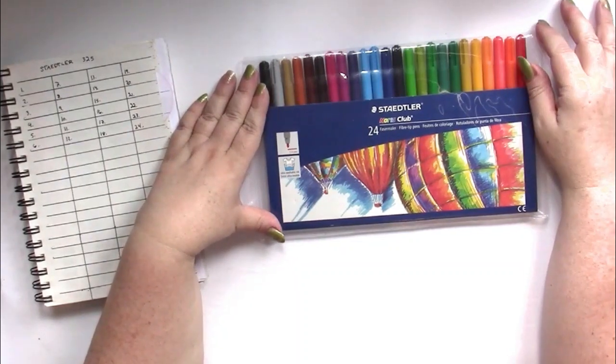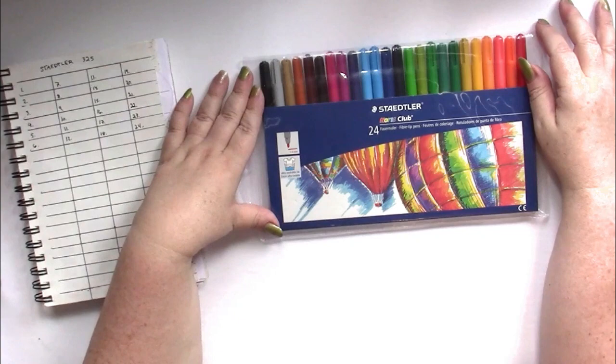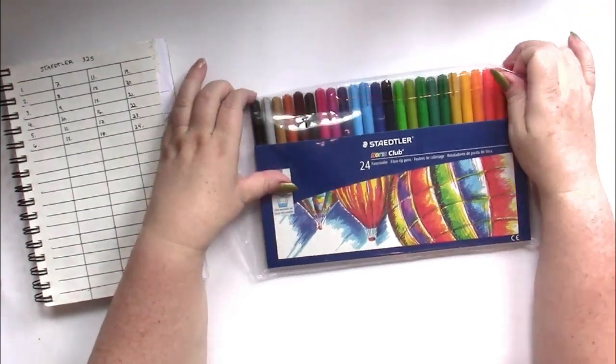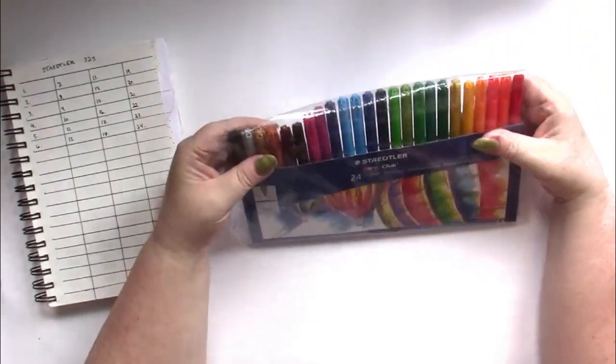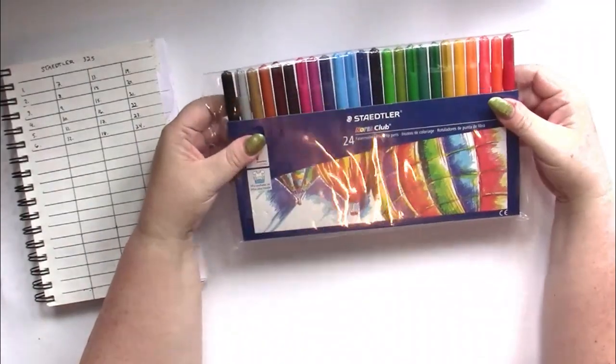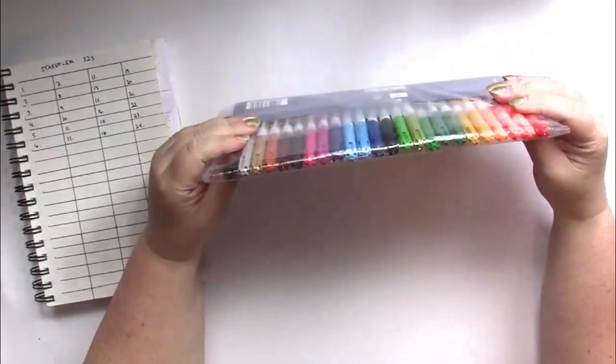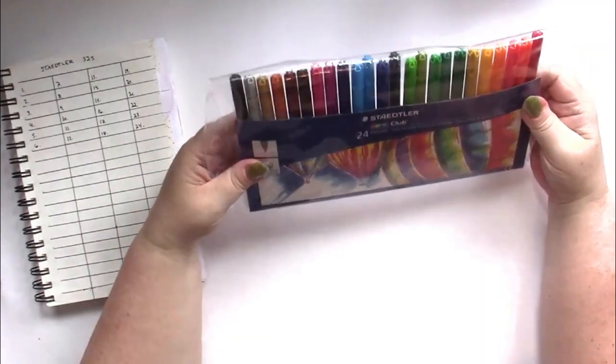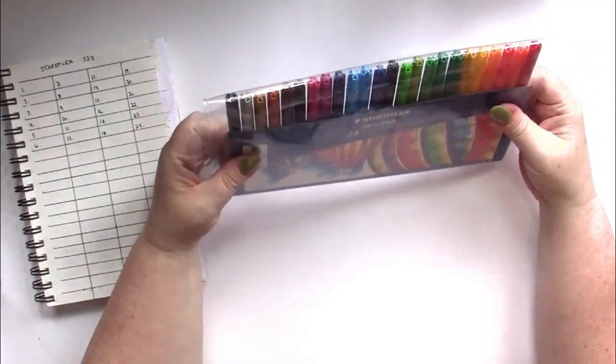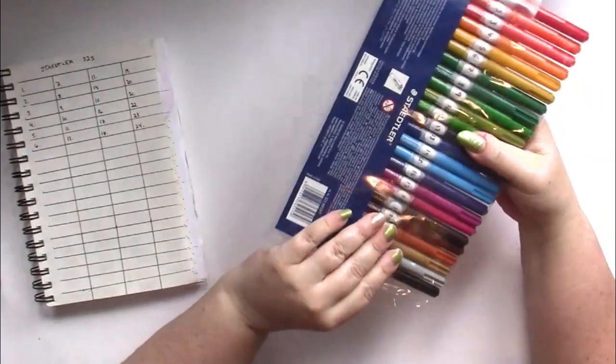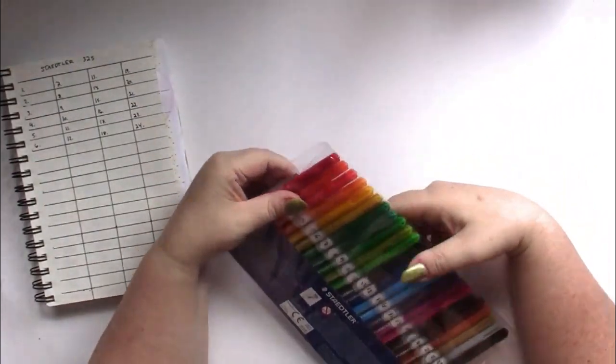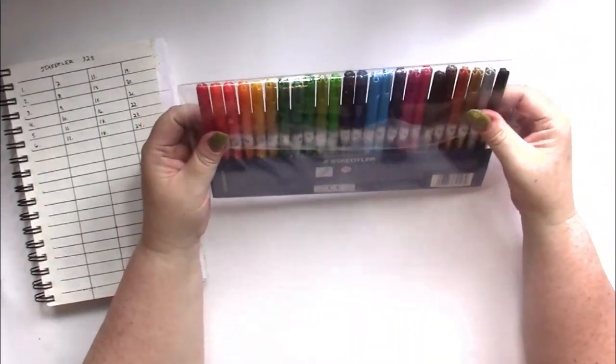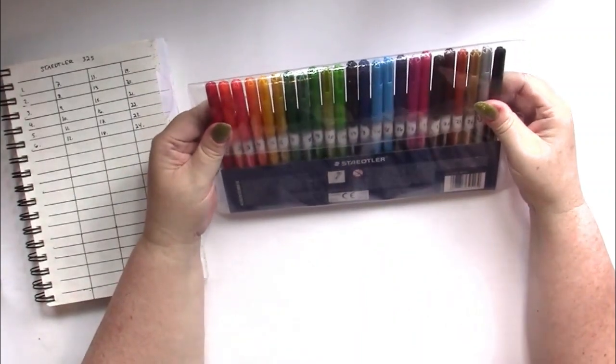These have a 1 millimeter tip and they come in just a plastic bag like this that isn't really what you're going to want to keep them in. So I'll be taking them out of here as I swatch them and putting them into my pen holders.